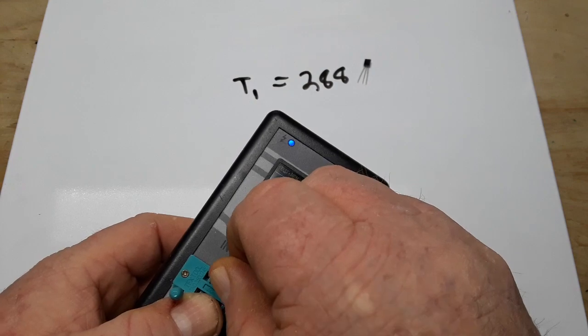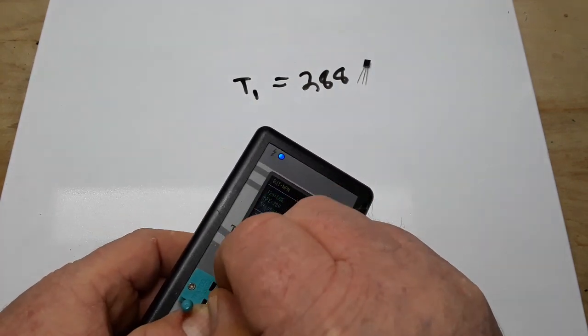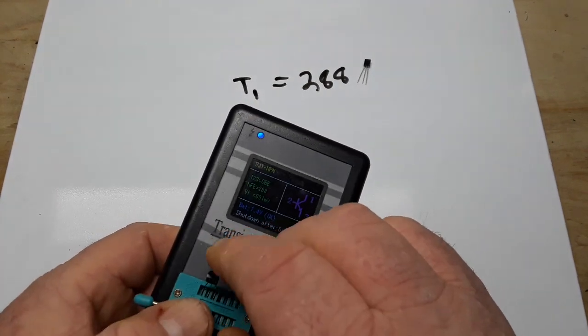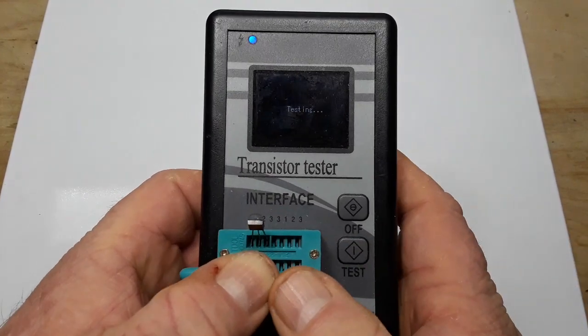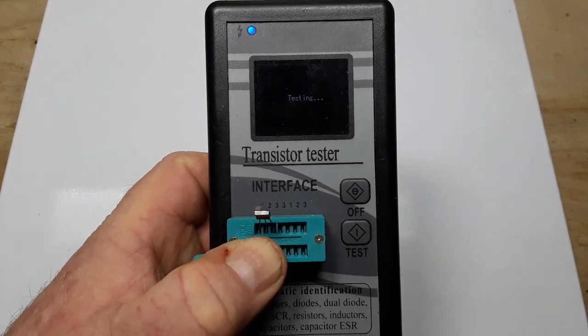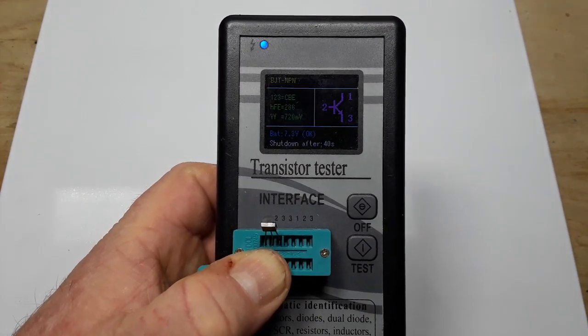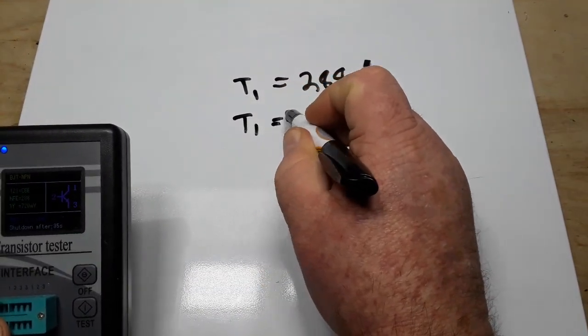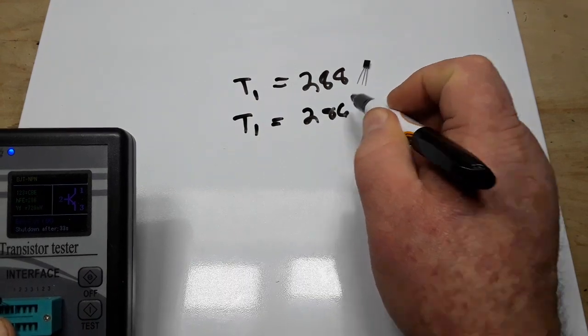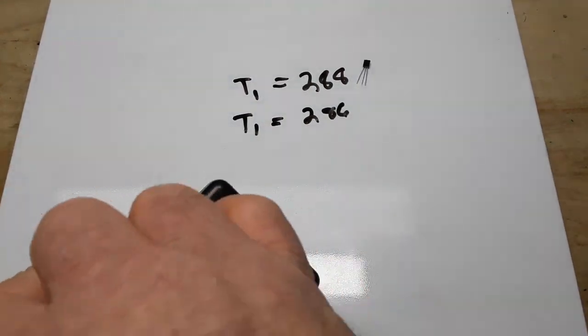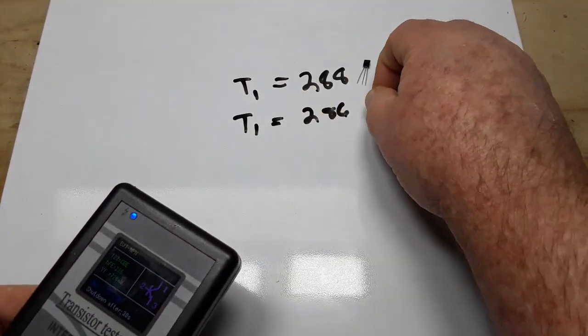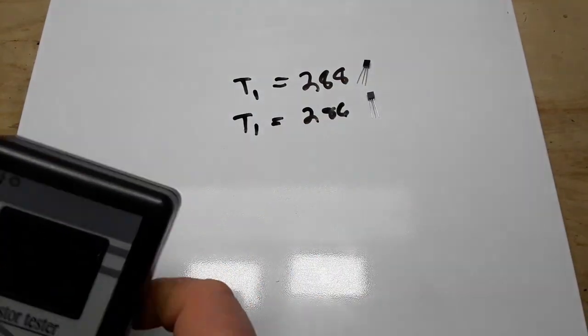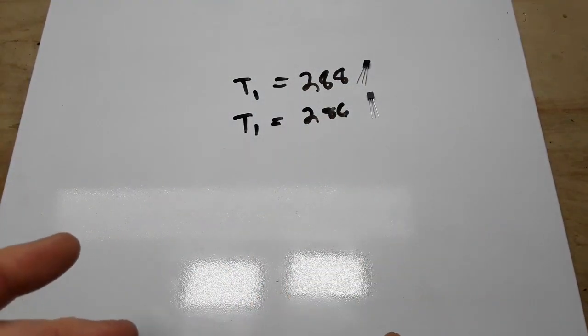Now we'll feed transistor two into our tester here. We'll test number two. 286.